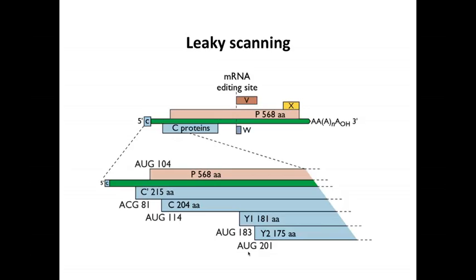Leaky scanning is another way of making many proteins from a single mRNA. This example is from a paramyxovirus — negative-stranded RNA viruses that make subgenomic mRNAs. We're looking at one of those subgenomic mRNAs here, and this single mRNA can encode multiple proteins: one, two, three, four, five, six, seven — a minimum of seven different proteins.